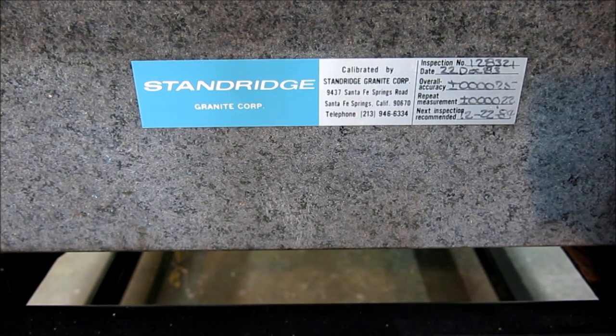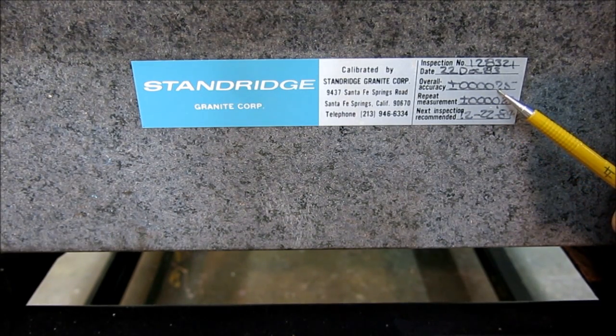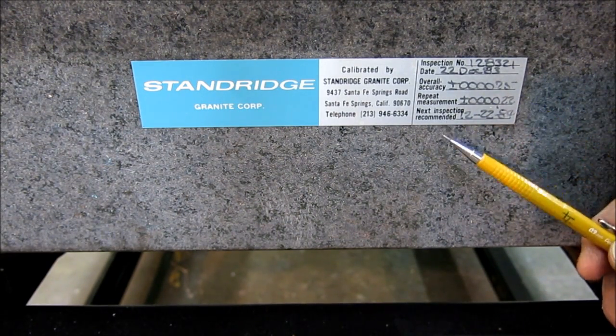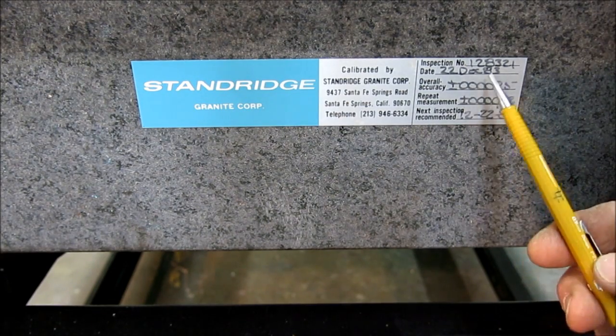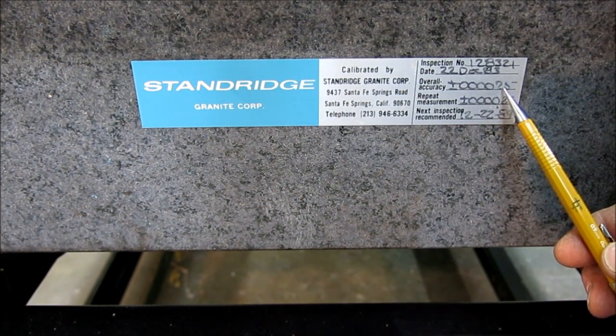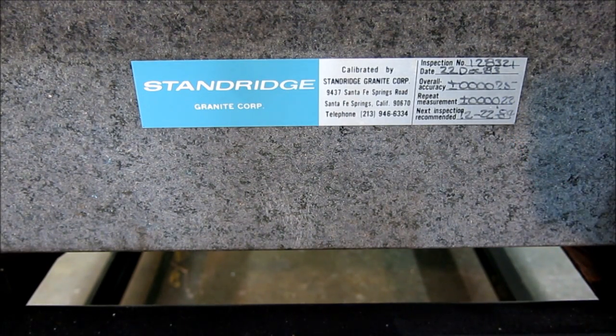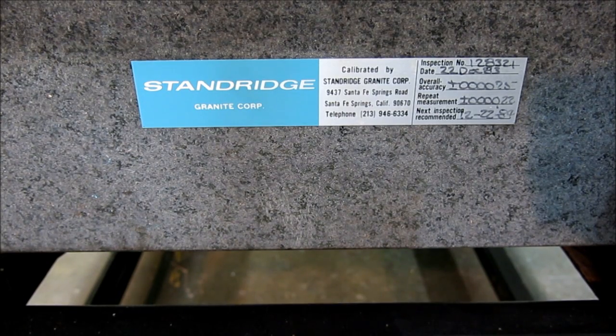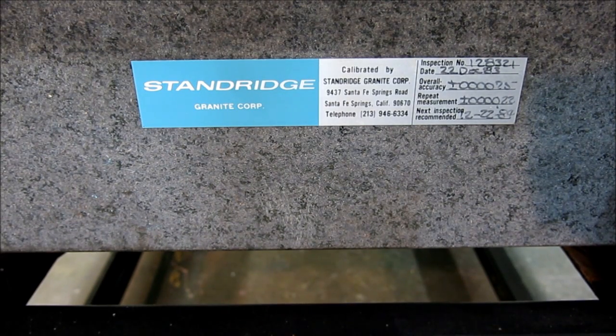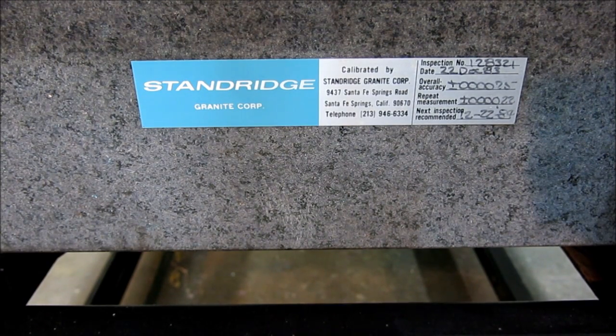The interesting part is it was a base for a machine. A laser interferometer sat on this for measuring some kind of wafers or something. This is one of the highest grade accuracy plates that Standridge makes. I'll take you in close and show you the label. It's beyond inspection grade. The price was right, so I pounced on it. I'm already using it. It's really nice.